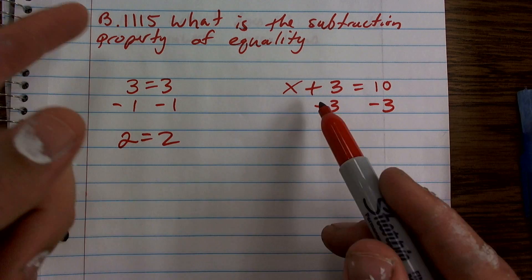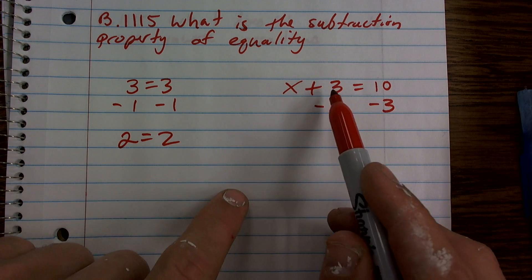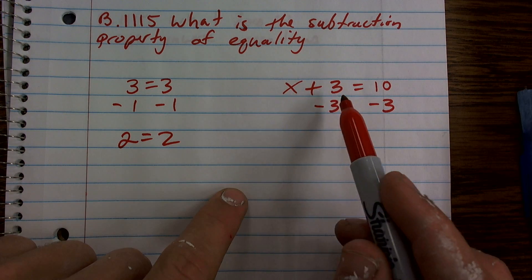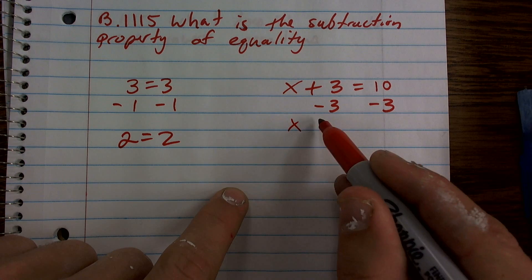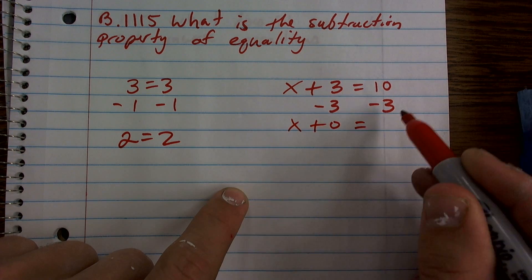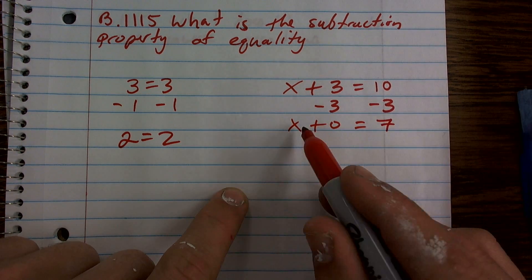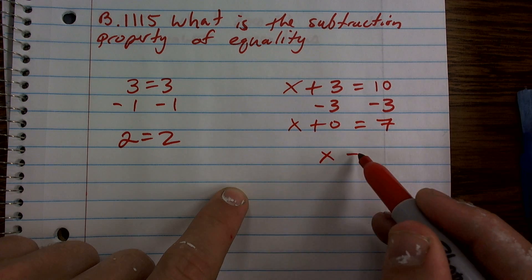We said the original solution was 7, so let's see if we get the same solution. I have positive 3 minus 3, which is going to give me 0. So 10 minus 3 is 7. x plus 0 is x equals 7.